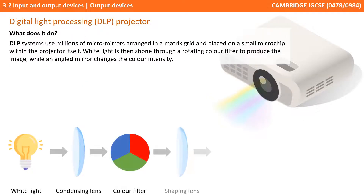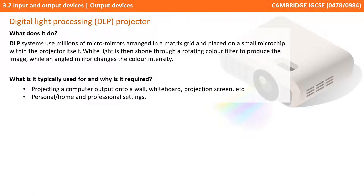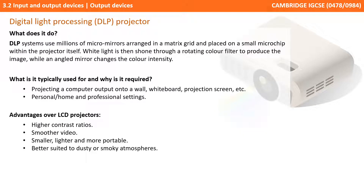The next device to look at is the Digital Light Processing or DLP projector. DLP systems use millions of micromirrors arranged in a matrix grid and placed onto the surface of a small microchip within the projector itself. White light is then shone through a rotating colour filter to produce the image, while an angled mirror changes the colour intensity. They're used for projecting a computer output onto a wall, whiteboard or projection screen, often used for personal, home and professional settings. They have several advantages over LCD projectors: they provide a higher contrast ratio, smooth video, are generally smaller and lighter and thus more portable, and are also better suited to dusky or smoky atmospheres.